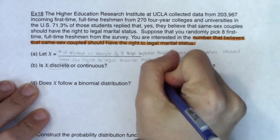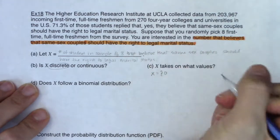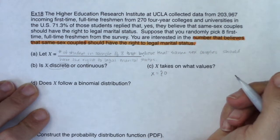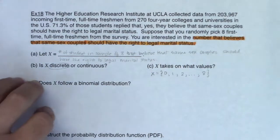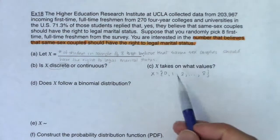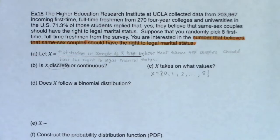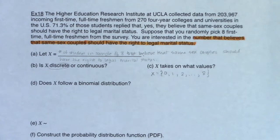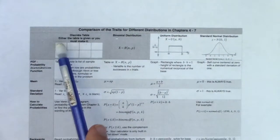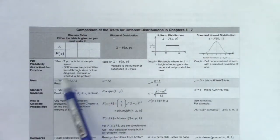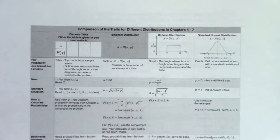What values can X take on? Well, if there are eight folks in my sample, zero could believe that same-sex couples should have the right to marry, one could believe, two, all the way up to eight. Now if I was going to make a table, I have nine values, plus a labeling column, so ten columns total — that's a lot. So I'm going to ask myself: is this binomial? Because if I can recognize it as binomial, I get all these shortcuts. I don't have to make a table; I can use binomial PDF and CDF.